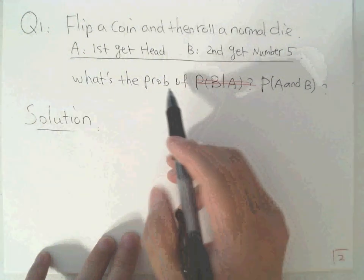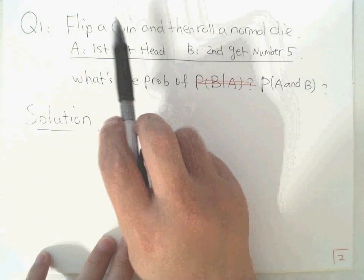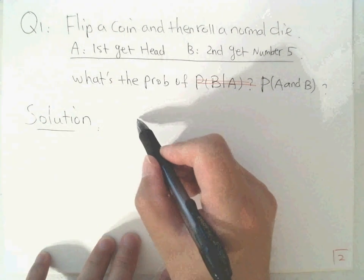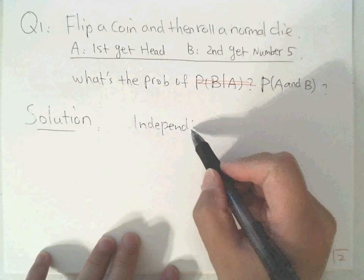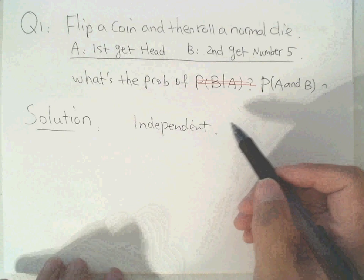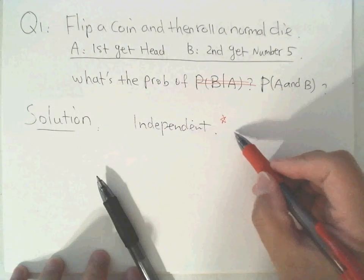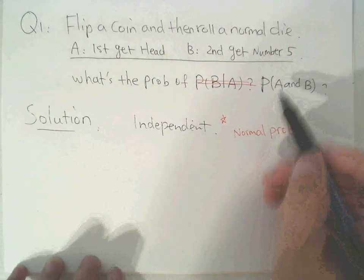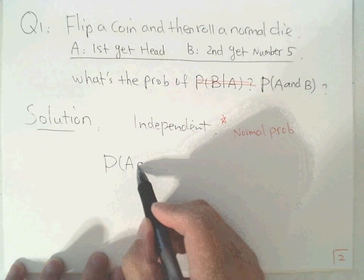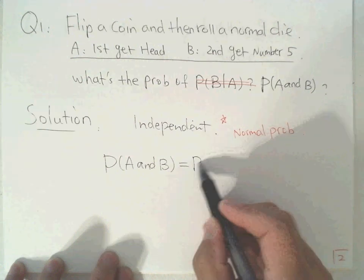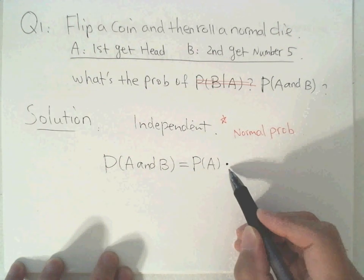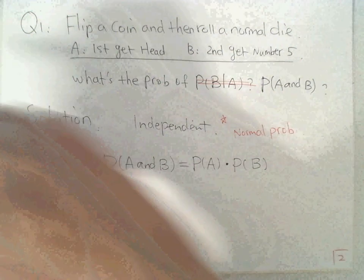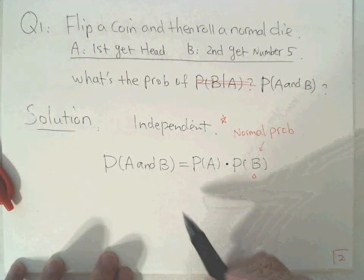For this case, flipping a coin — no matter the result — never affects the die roll. So this is independent, which means we use normal probability for the second step. The probability of A and B equals the probability of A times the probability of B. The first step: flip a coin and get heads — that's 1 out of 2. The second step: roll a die and get number five — that's 1 out of 6.